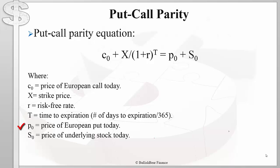P₀ is the price of the European put option. This put option also has a strike price of X. And S₀ is the price of the underlying stock today.